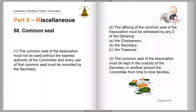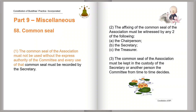Part 9, Miscellaneous 58. Common Seal. 1. The common seal of the association must not be used without the express authority of the committee, and every use of that common seal must be recorded by the secretary.